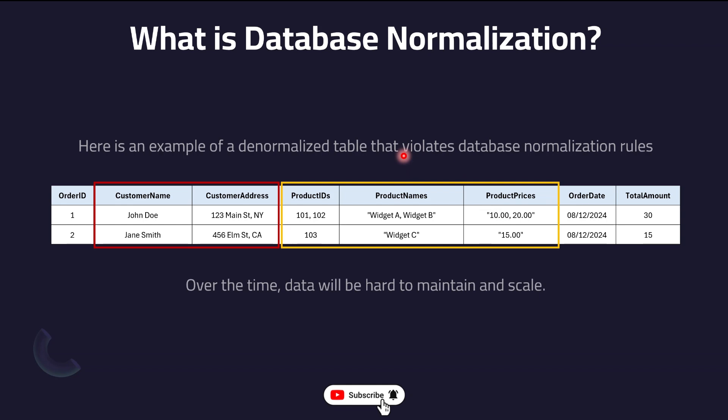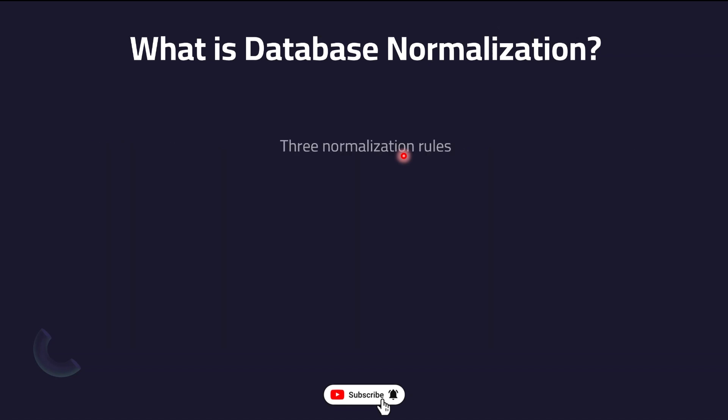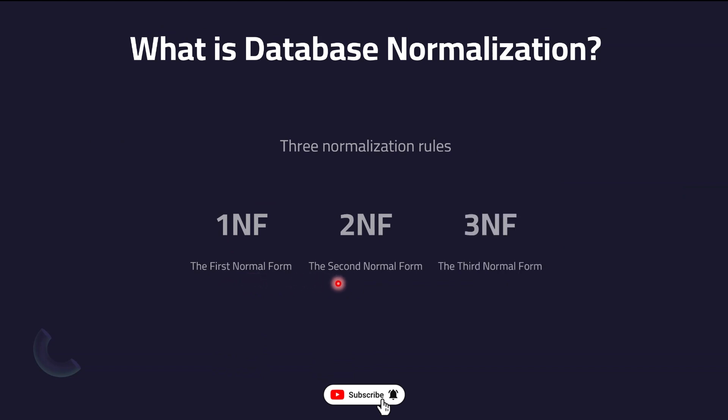There are three rules generally followed by database developers. I call them rules — if any expert is watching, please correct me if I'm wrong. Those three rules are: 1NF — First Normal Form, 2NF — Second Normal Form, and 3NF — Third Normal Form. We are now going to look into each one of these in a little bit of detail.